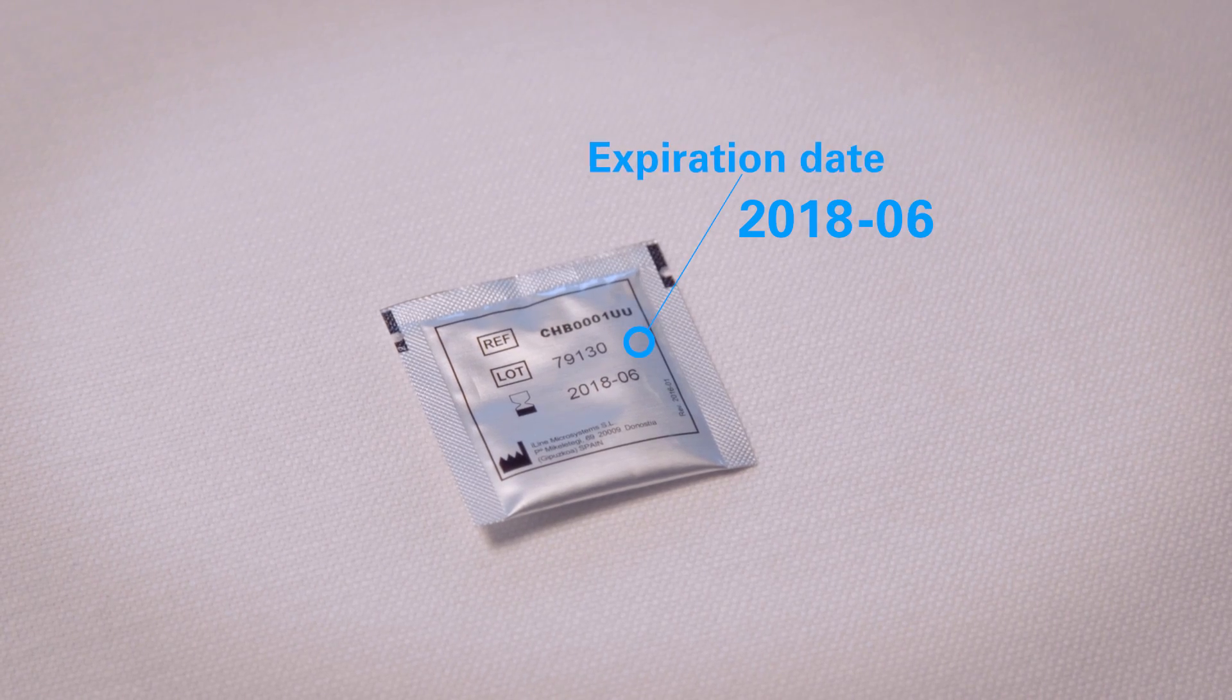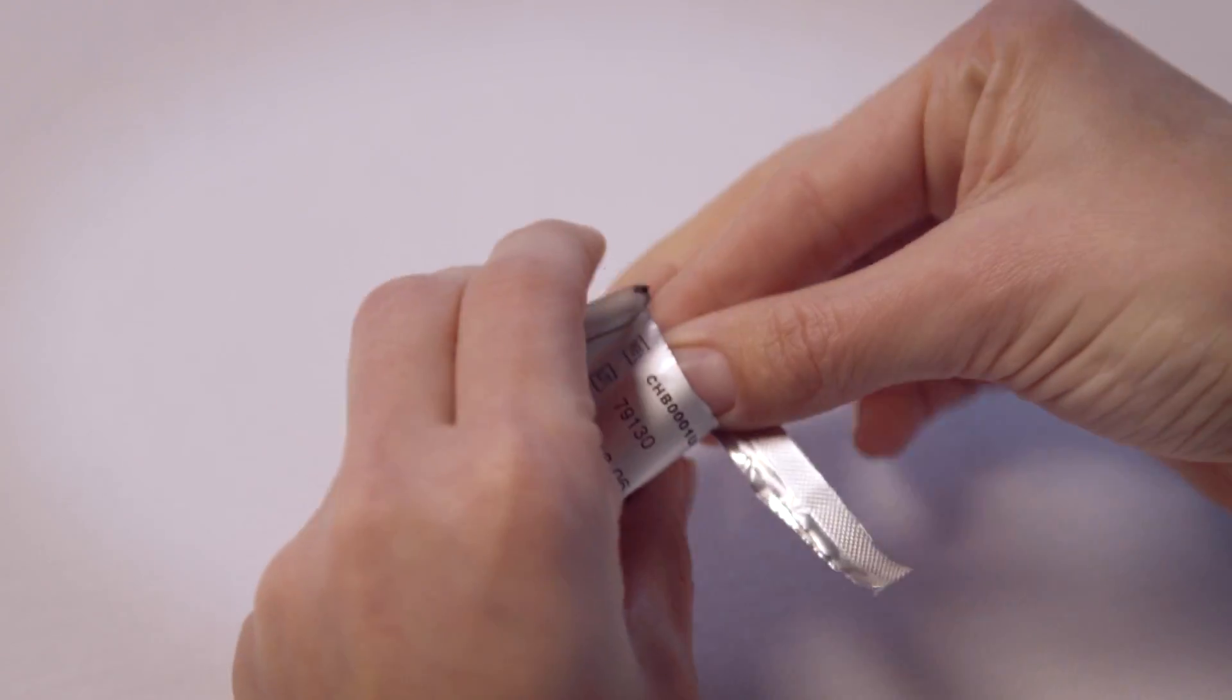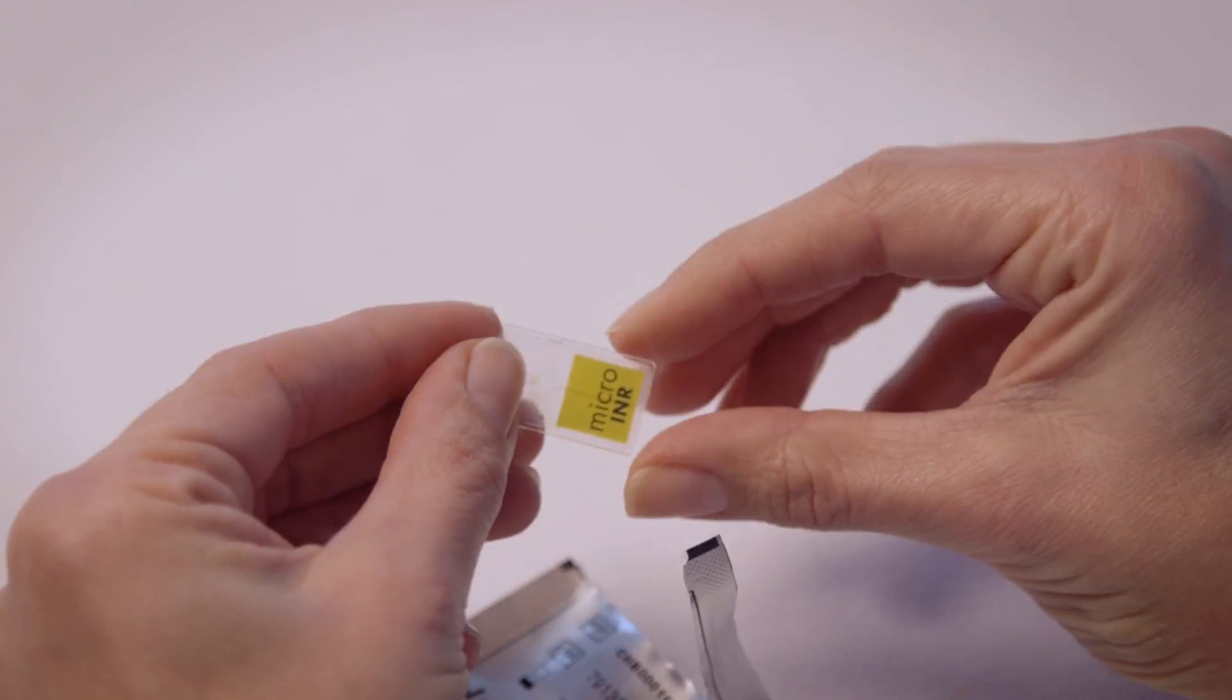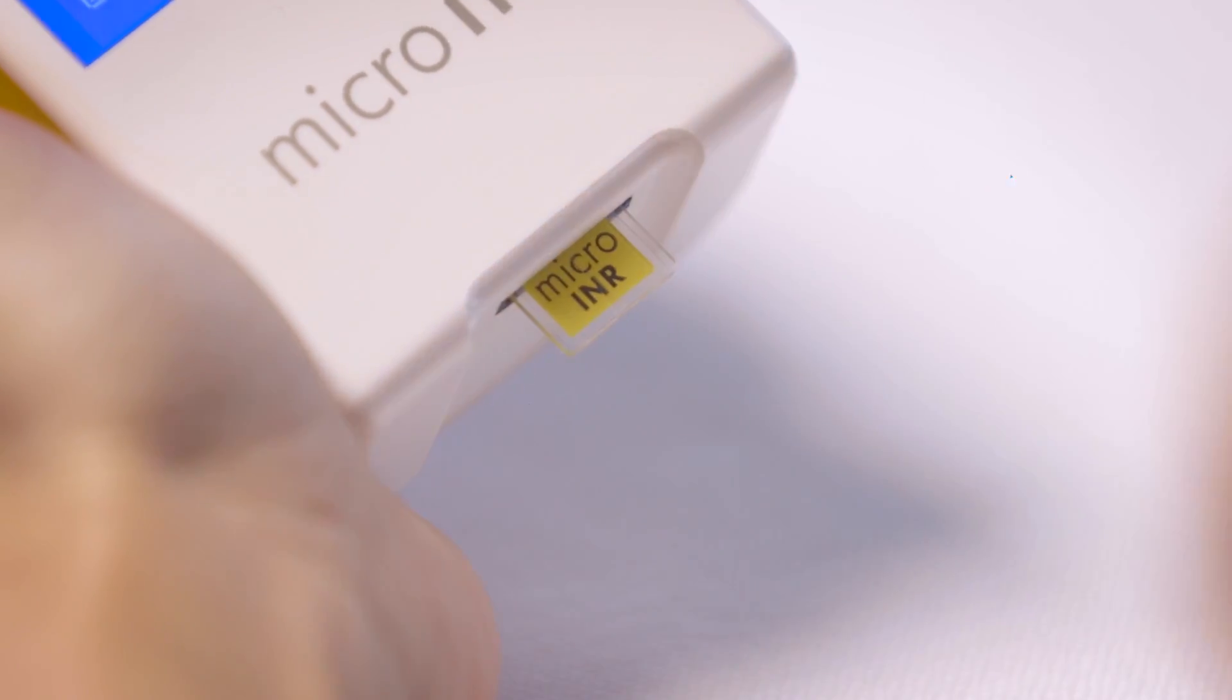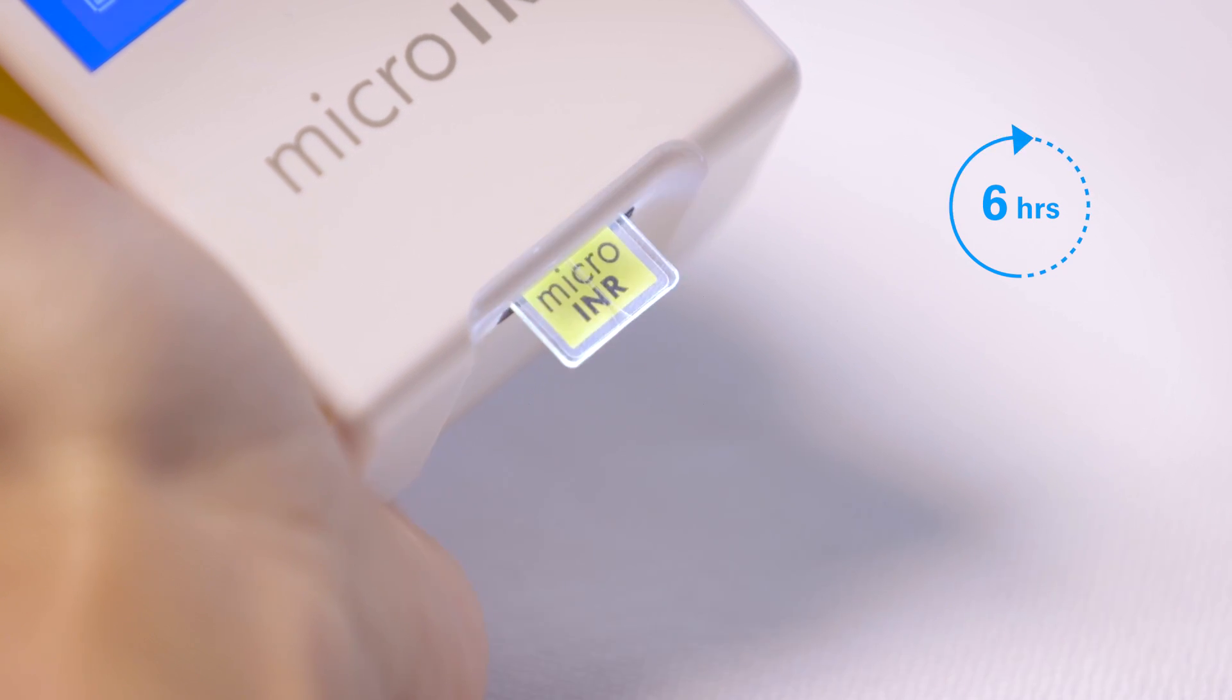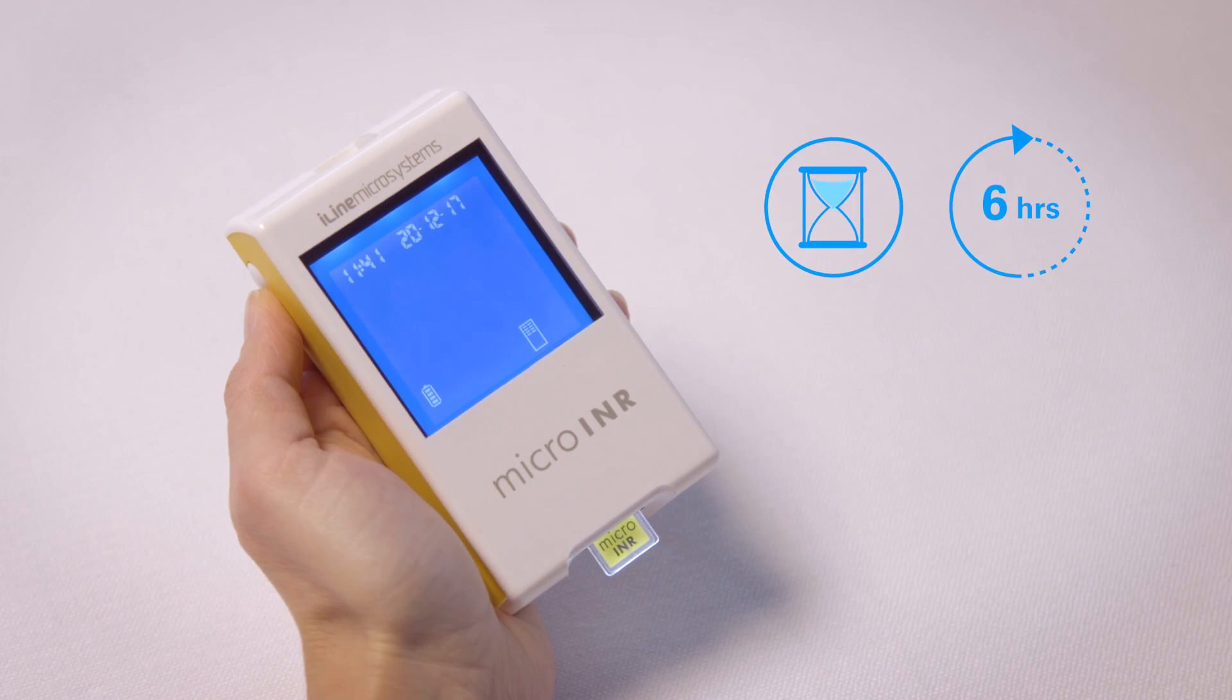Check the expiration date of the chip. Take the chip out of the pouch and insert the chip into the meter. The meter will automatically turn on. The chip needs to be used within six hours after opening the pouch. The meter warms up.